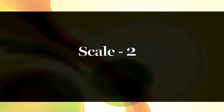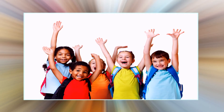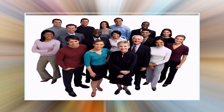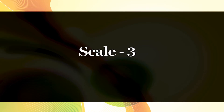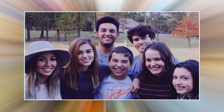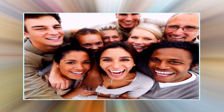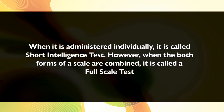Scale 2 is used for the age group of eight to thirteen years and average adults. Scale 3 is used for the age group of thirteen to seventeen years and superior adults. Scales 2 and 3 contain two equivalent forms, A and B. Each form can be administered individually or in combination with the other form. When administered individually, it is called the Short Intelligence Test; when both forms are combined, it is called the Full Scale Test.